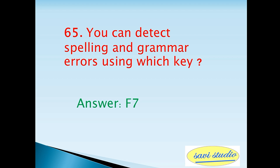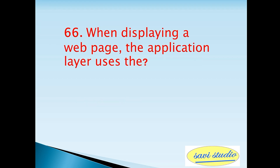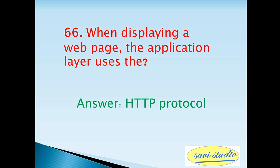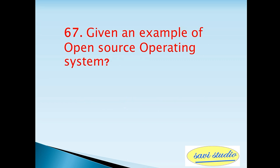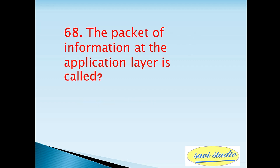Sixty-fifth question: you can detect spelling and grammar errors using which key? Answer: F7. Sixty-sixth question: when displaying a web page, the application layer uses the — answer: HTTP protocol. Sixty-seventh question: give an example of an open source operating system — answer: Linux. Sixty-eighth question: the packet of information at the application layer is called — answer: message.